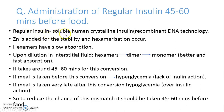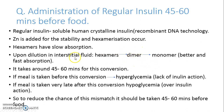Regular insulin is a soluble human crystalline insulin prepared by recombinant DNA technology. Zinc is added to give more stability to this preparation, and with zinc present, hexamerization occurs. The difference between hexamers and monomers/dimers in absorption is that hexamers have slower absorption compared to dimers and monomers. Monomers are better and faster absorbed. This conversion from hexamer to monomer happens upon dilution of regular insulin in interstitial fluid and takes around 45 to 60 minutes.